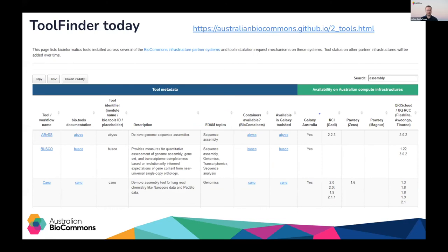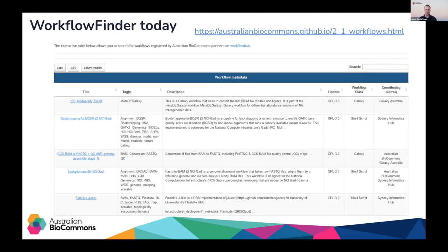Tool finder lists bioinformatics tools of interest to the Australian life sciences community. It merges this list with standardized tool metadata that includes links to global registries, licences and categorizations provided via the EDAM ontology, but also the specific versions installed centrally on BioCommons partner compute infrastructures. Workflow finder draws directly on the global registry Workflow Hub, where BioCommons and its partner infrastructures maintain a space for best practice workflows deployable on Australian national infrastructure.